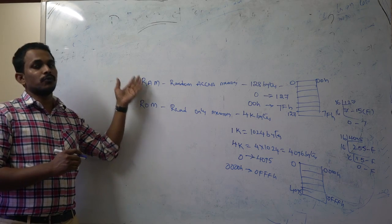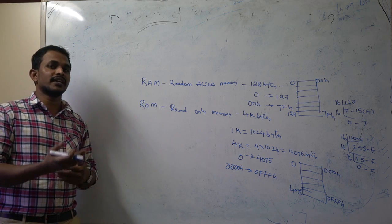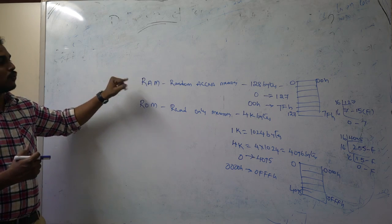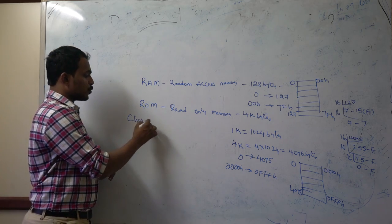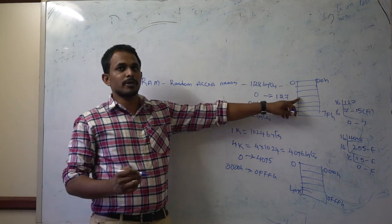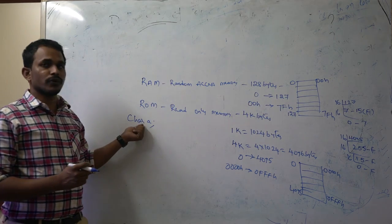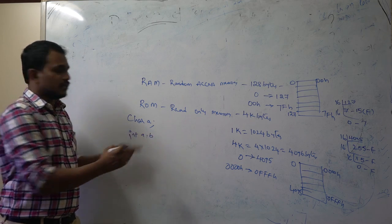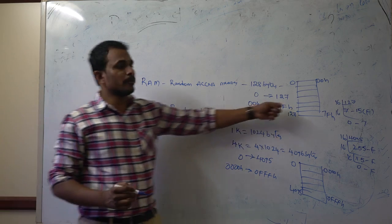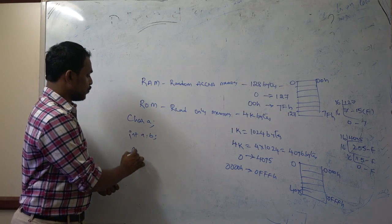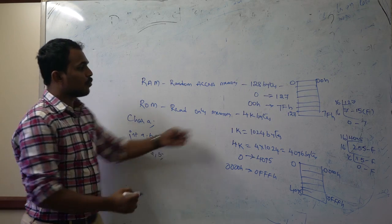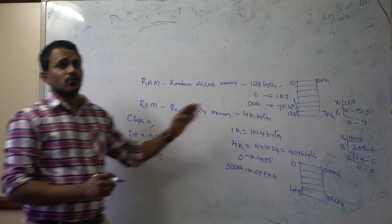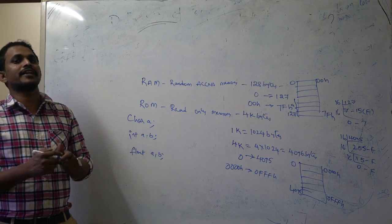RAM memory is used for variables declared in your program. In C programming, you must concentrate on data types, because declaring a character variable occupies one memory cell since character is one byte. An integer variable occupies two memory locations, and a float variable occupies four memory locations from the RAM.